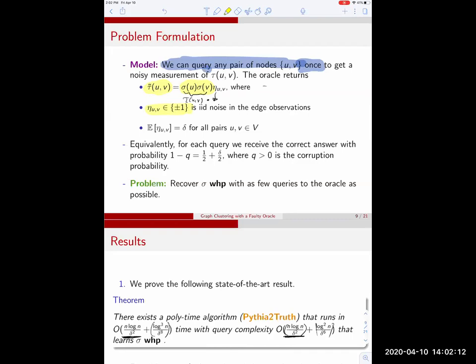We assume that the expected value of eta uv is delta. Equivalently you can see this model as choosing a pair of nodes, you query them and you get the correct answer if they belong to the same cluster with probability one half plus delta over two and with probability one half minus delta over two we get the wrong answer. You can see this is equivalent because expected value of eta uv is one half minus delta over two times minus one plus one half plus delta over two times plus one which is exactly delta.